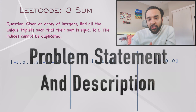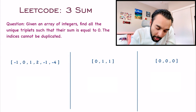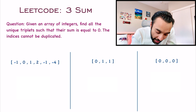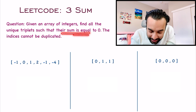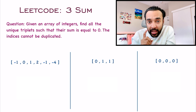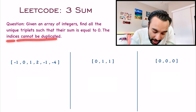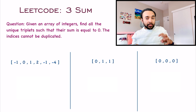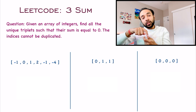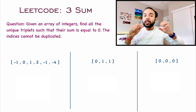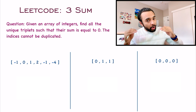First of all, let's make sure that we are understanding the problem statement correctly. In this problem, you are given an array of integers and you have to find out all the unique triplets such that their sum is equal to zero. And there is one more condition — you cannot choose the same index twice. It simply means that if you have chosen an index, you cannot use it again to find the total sum as zero. Given all of these conditions, you have to find out all of the possible triplets.